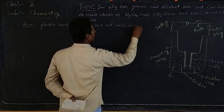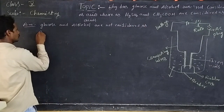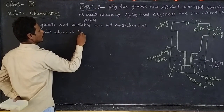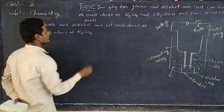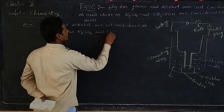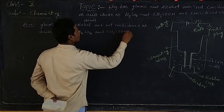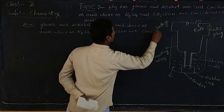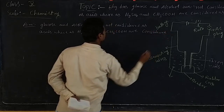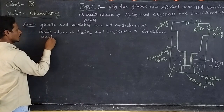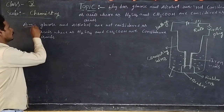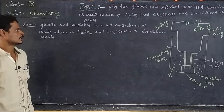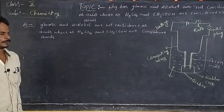The aim of the next activity is to show that glucose and alcohol are not considered acids, whereas H₂SO₄ and CH₃COOH are considered acids.